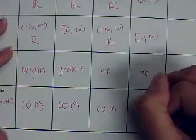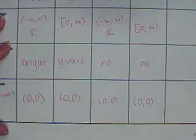There is no symmetry. And the zero is at 0, 0. That's where it crosses the x-axis.